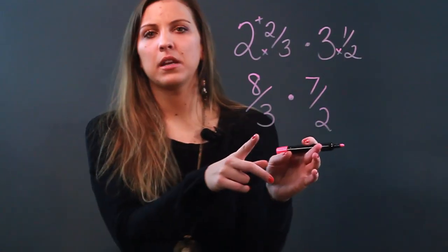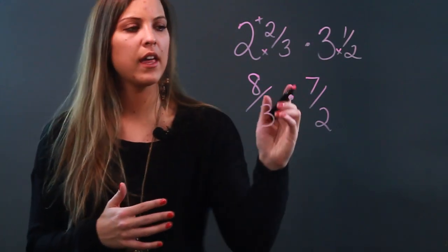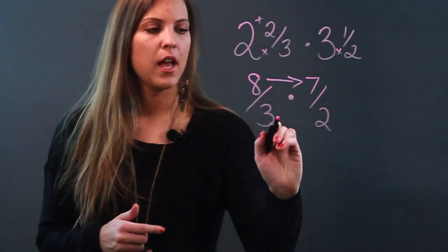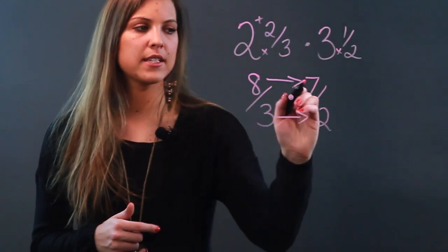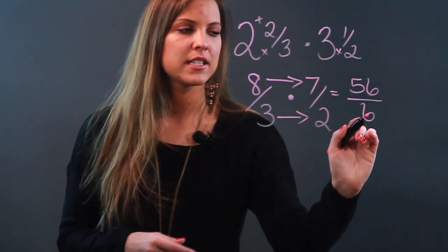Now that I've converted my mixed numbers into improper fractions, all I'm going to do is multiply fractions. And the way that you do that is you simply multiply straight across. My numerator times my numerator: 8 times 7, 56. And my denominator times my denominator, which is 6.